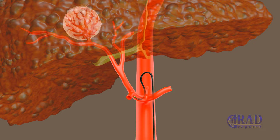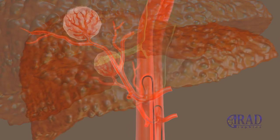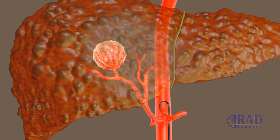Following this, angiograms of the celiac trunk are conducted to delineate the anatomy of arteries that supply the liver parenchyma and the liver tumor. This process also helps in identifying any variant anatomical structures and collateral arteries that may be feeding the tumor. The wire is replaced with a combination of a microcatheter and microwire to enable more selective angiograms and precise mapping of the vessels supplying the tumor.